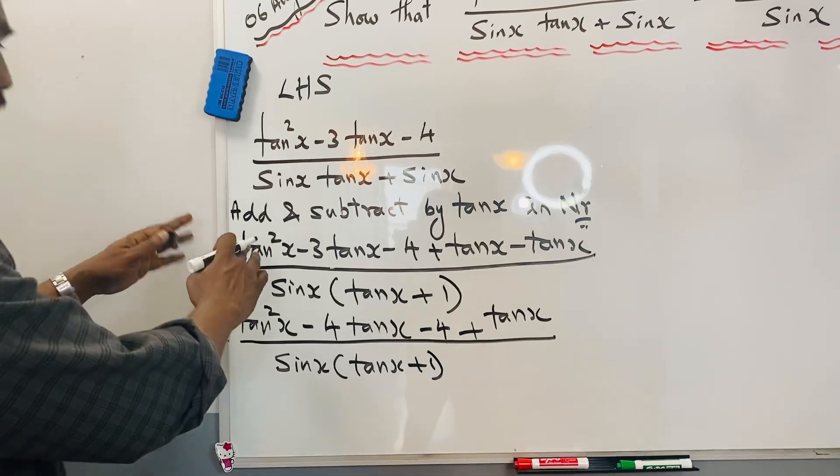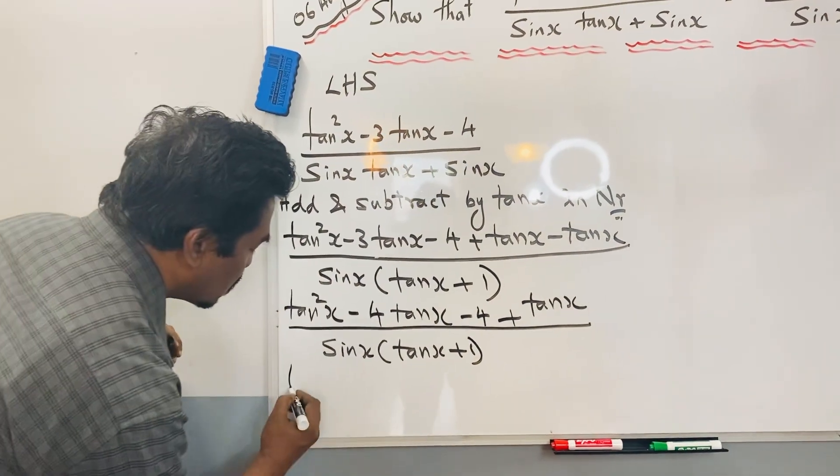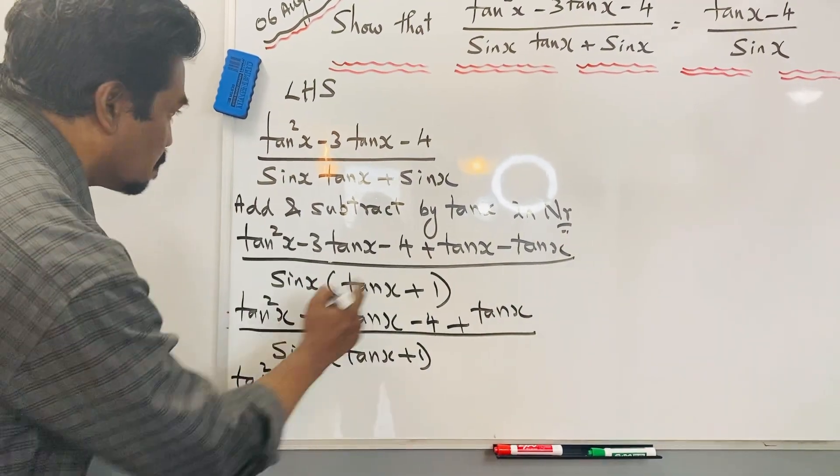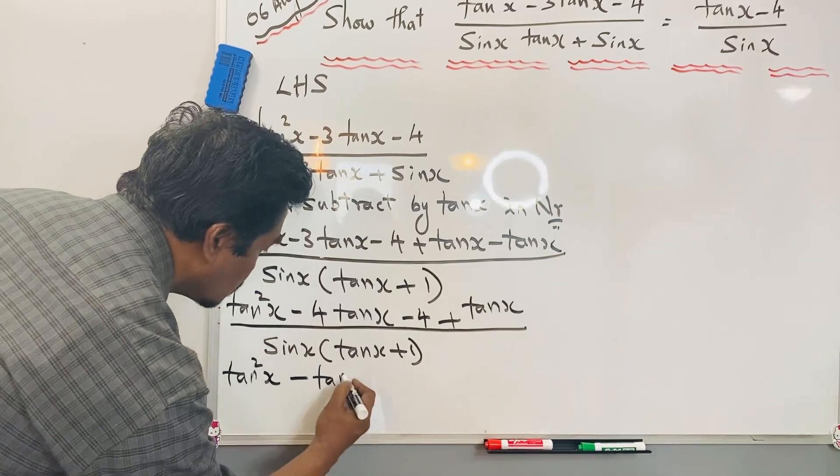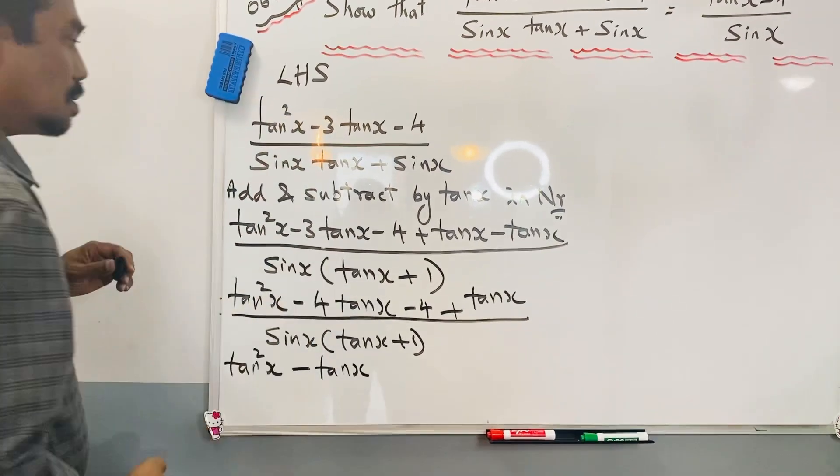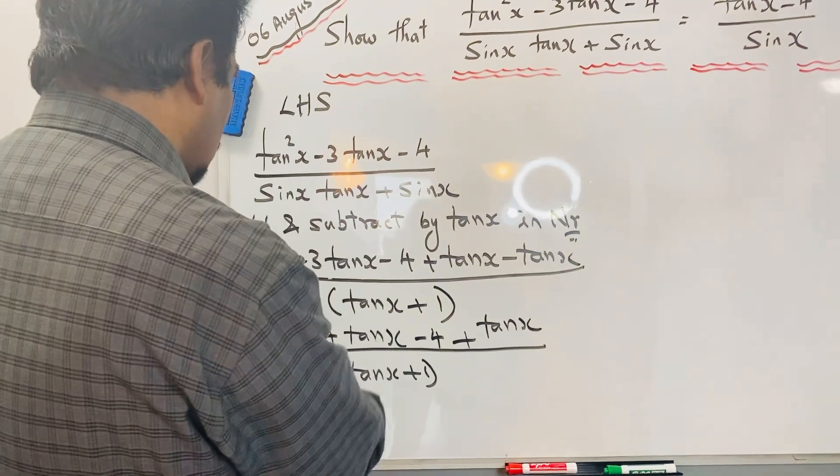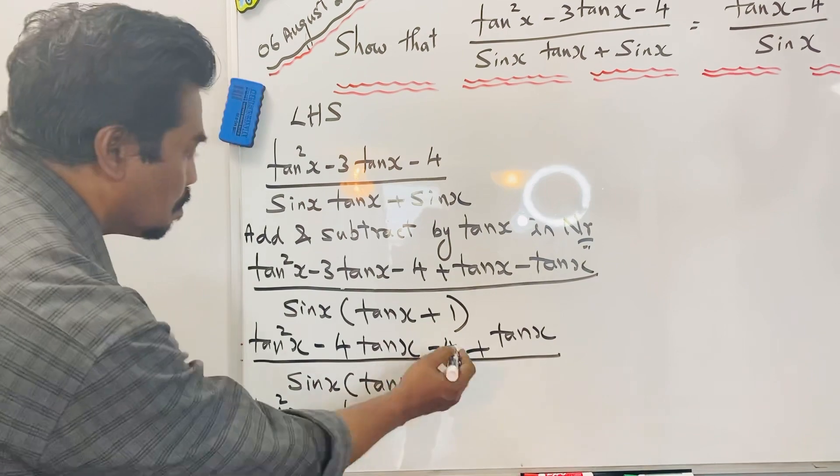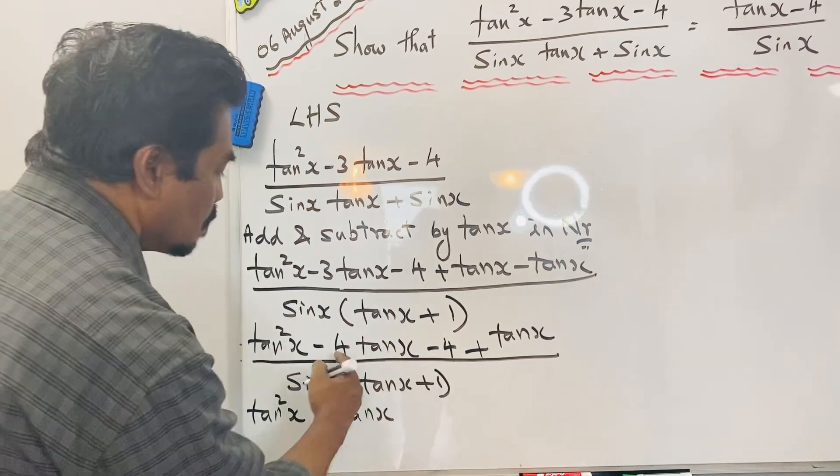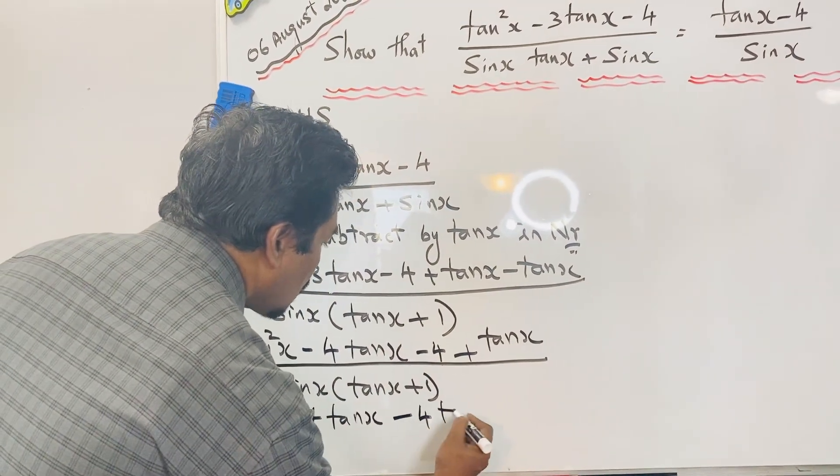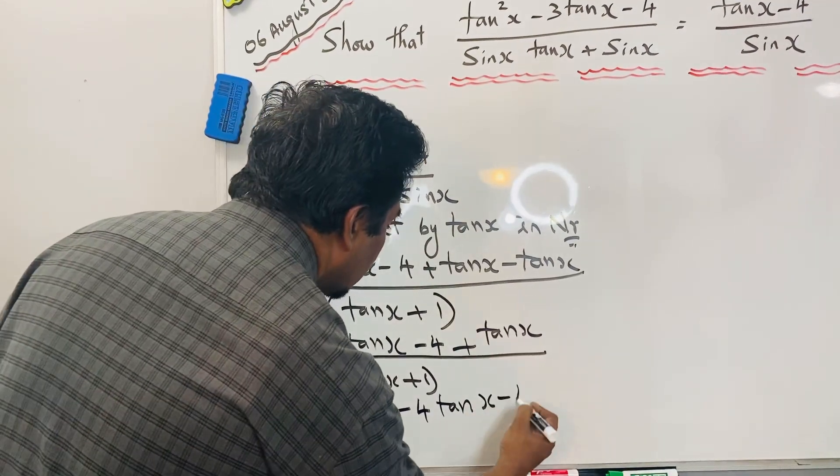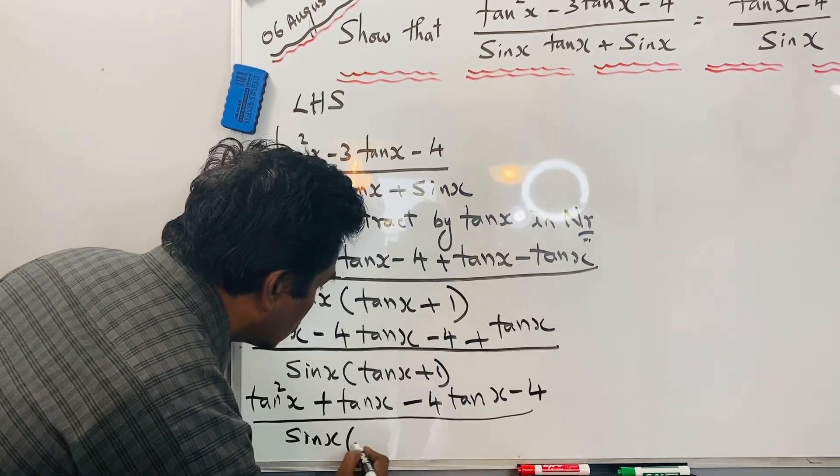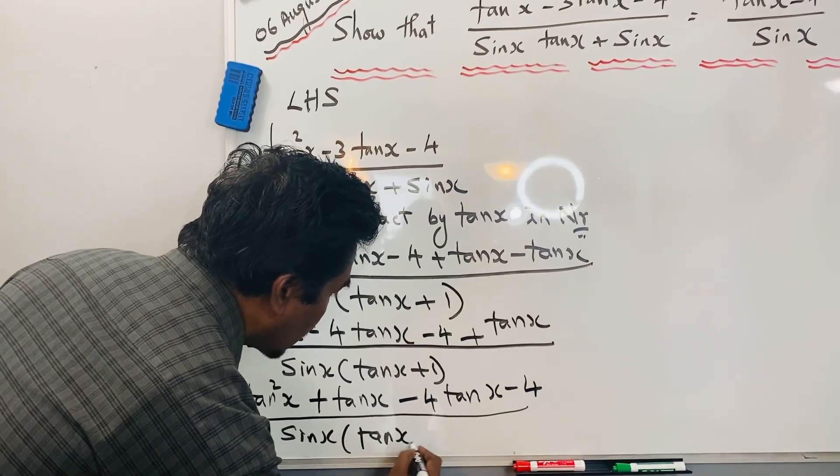For our convenience, I want to rewrite the equation in arranged form. So first term, I put that tan²x. Then +tanx. Then the rest from here. Tan²x + tanx - 4. Now here it is negative 4. Negative 4 times 1 over sinx(tanx + 1).